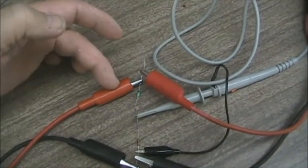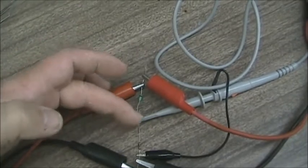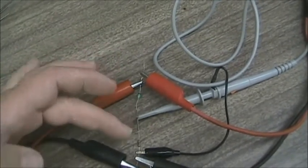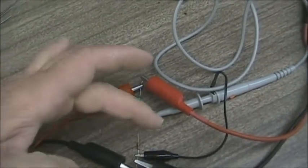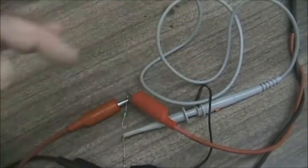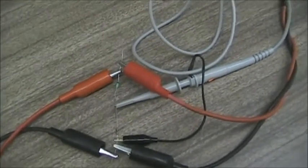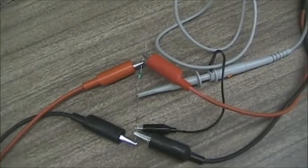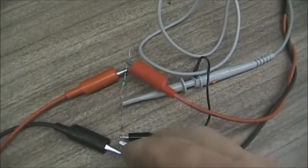We'll measure the point between the L and the R using the scope probe. That's a times 10 probe, so you'll have to set up your channel for that. And then the grounds are connected together.